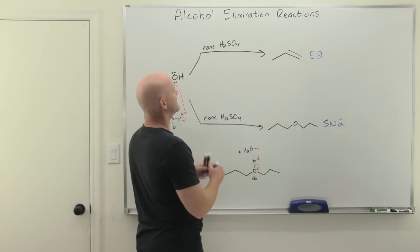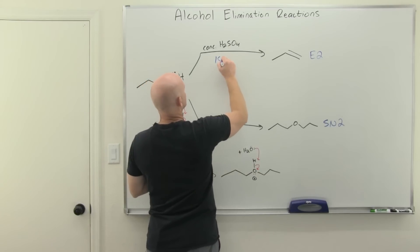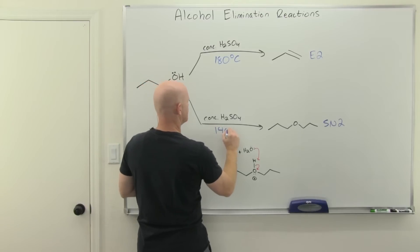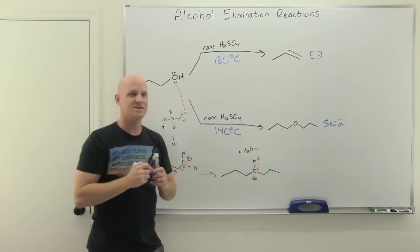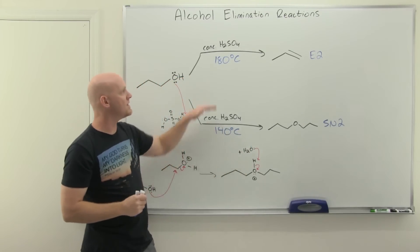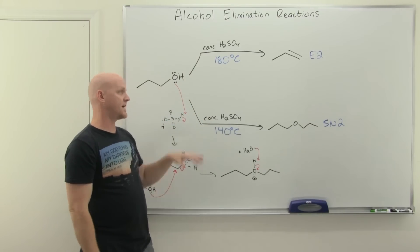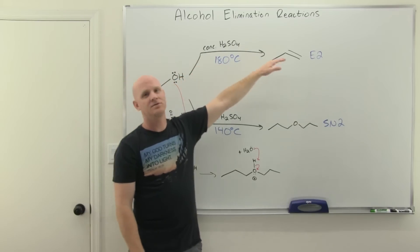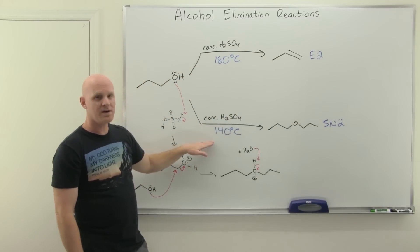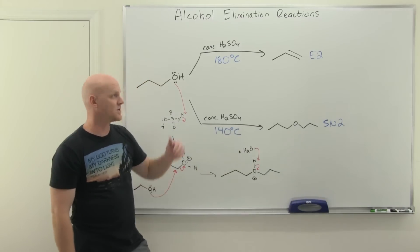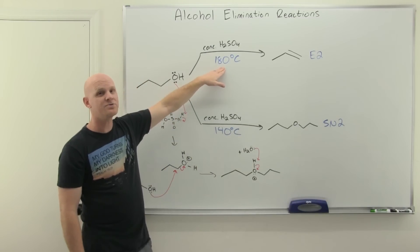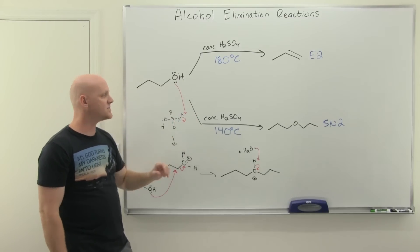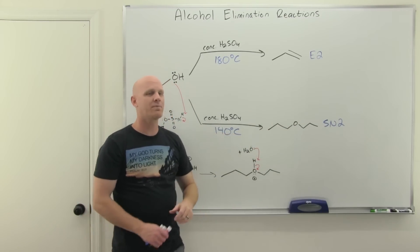Both reactions only occur at fairly high temperatures. The key difference: carry out the elimination at 180°C and the substitution to form an ether at 140°C. Some of you will be on the hook for these exact temperatures — 180°C means elimination, 140°C means substitution to form an ether. We call the elimination unimolecular dehydration (single molecule of alcohol) and the ether formation bimolecular dehydration (two molecules of alcohol).